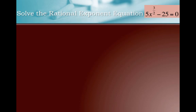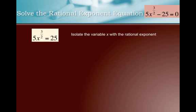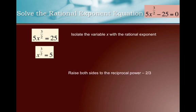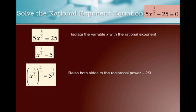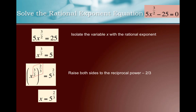Let's actually solve one. First, get the rational exponent expression by itself — I need x to the three-halves isolated on one side. I'll add 25 to both sides first, then divide both sides by 5. Now my rational exponent variable is isolated. Step two: raise both sides to the reciprocal power, which is two-thirds. A power raised to a power means we multiply, so three-halves and two-thirds undo each other, giving plain x, which equals 5 to the two-thirds.